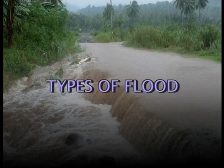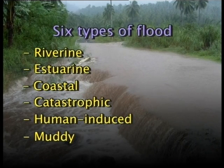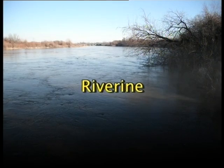Before coming to the protection measures, we should know about the types and causes of floods. Floods are of various types. There are six main types of floods: riverine, estuarine, coastal, catastrophic, human-induced, and muddy. The riverine type of flood is again categorized into two types: slow kinds and fast kinds.